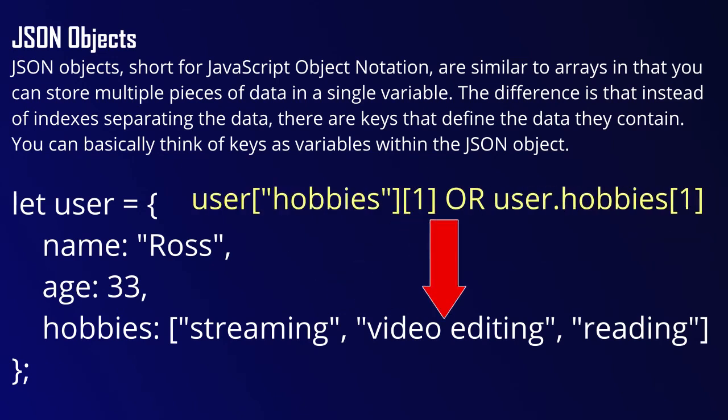For the second index in the hobbies array, you would call either user['hobbies'][1] to access that element.